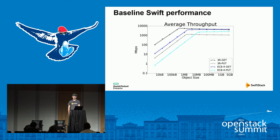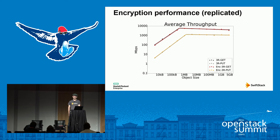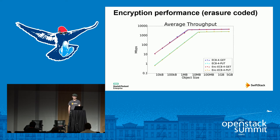So that's our baseline. What does it look like when we turn on encryption? If you can't tell the difference, neither can I. There are actually four distinct lines there. We still have the same bottlenecks — for small objects, we are constrained by the connections and parsing HTTP; for large objects, we end up saturating our NICs. Looking at erasure-coded policies, we see the same basic trend, with perhaps some slight degradation, but your bottlenecks are going to be the same.